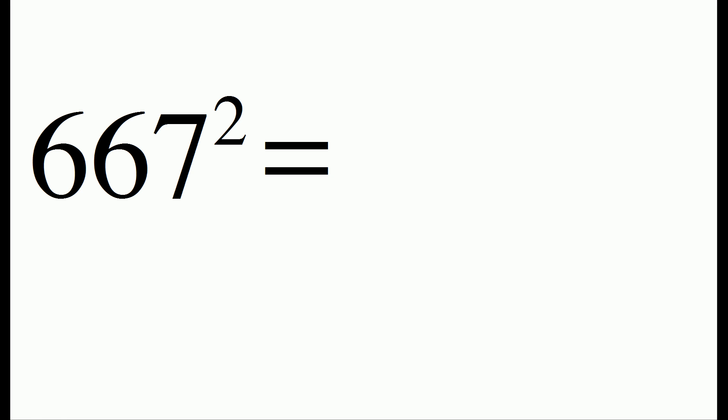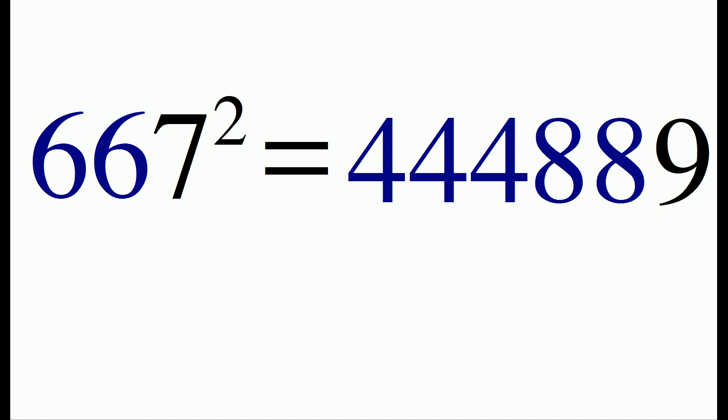In another example, 667 squared, we write down the digit 9, and then we count that there are 2 appearances of the digit 6. So we write the number 8 that many times, and the number 4 we're going to write one extra time.